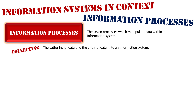Firstly is collecting, which is the gathering of data and then its entry into an information system — it's twofold. The gathering of data is how the data is obtained, whether through research and investigation or from another information system. We then get that data into our information system using different input devices, such as a keyboard and mouse on a desktop, or a touch screen on a phone or tablet.